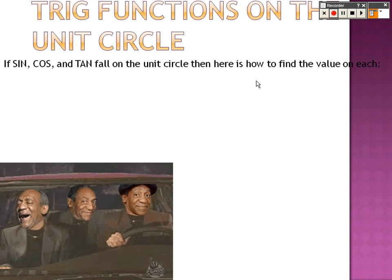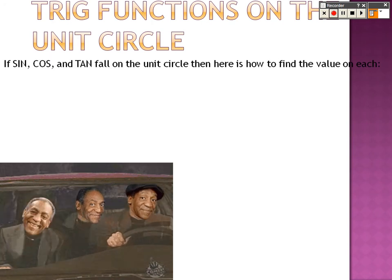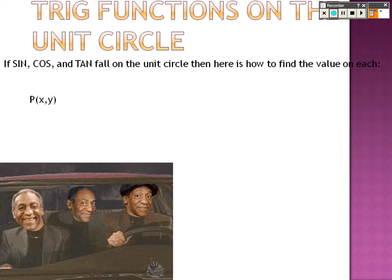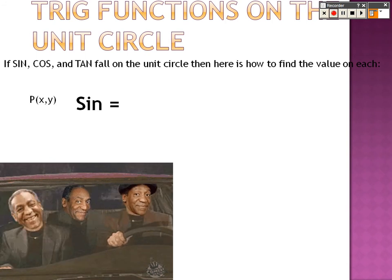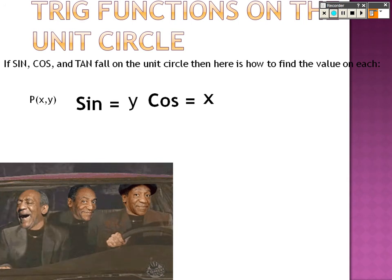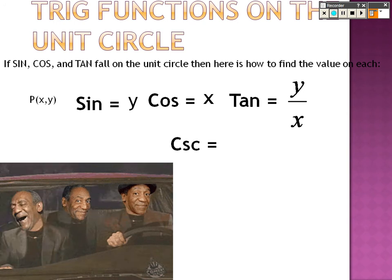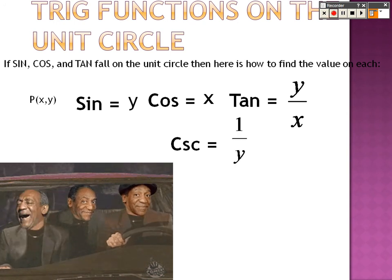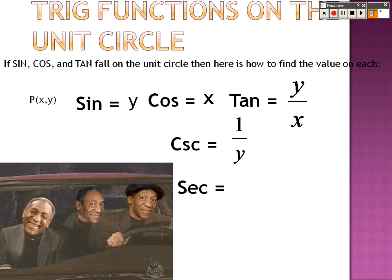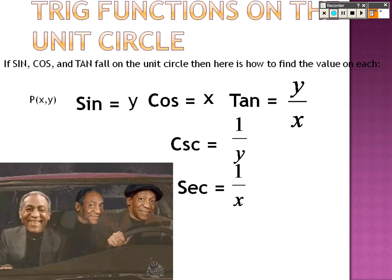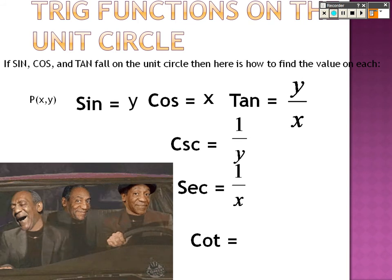Trig functions on the unit circle. If sine, cosine, and tangent fall on the unit circle, then here's how you find those values. It's x and y. Sine is y, cosine is x, tangent is just sine over cosine, or y over x. Cosecant is just you flipping it, so it's 1 over y. Secant is just you flipping cosine, so it's 1 over x. And cotangent is just you flipping tangent, so it would be x over y.